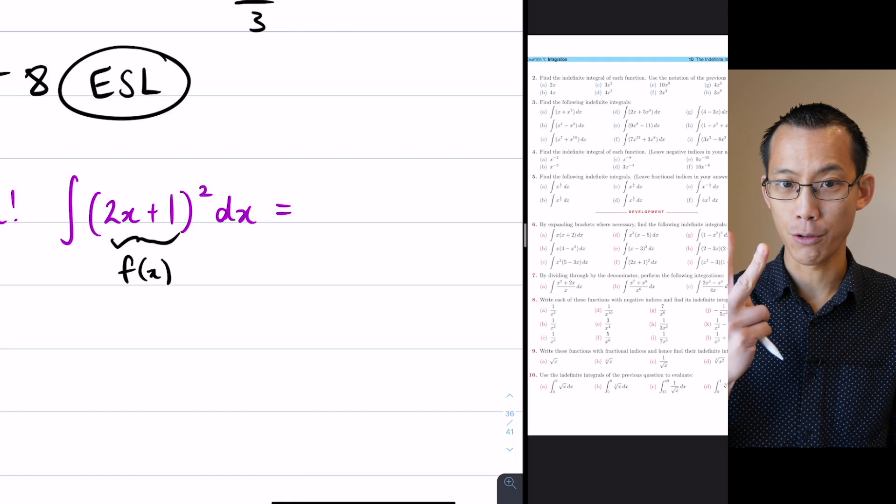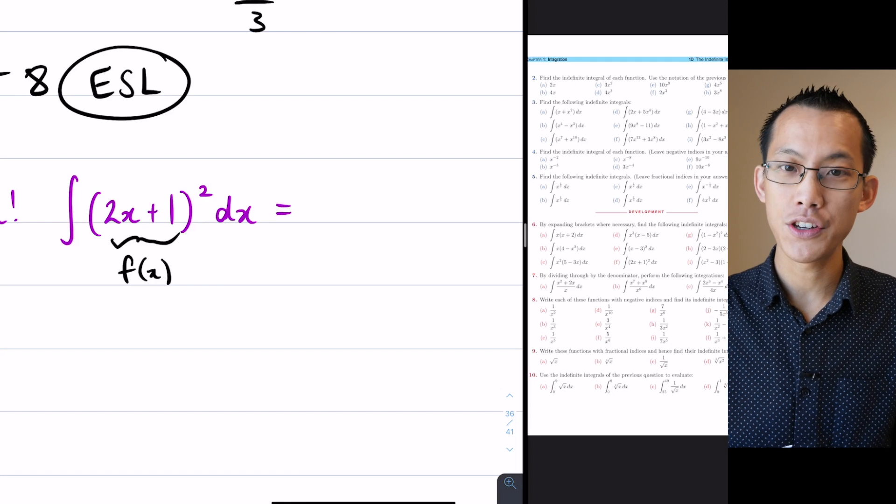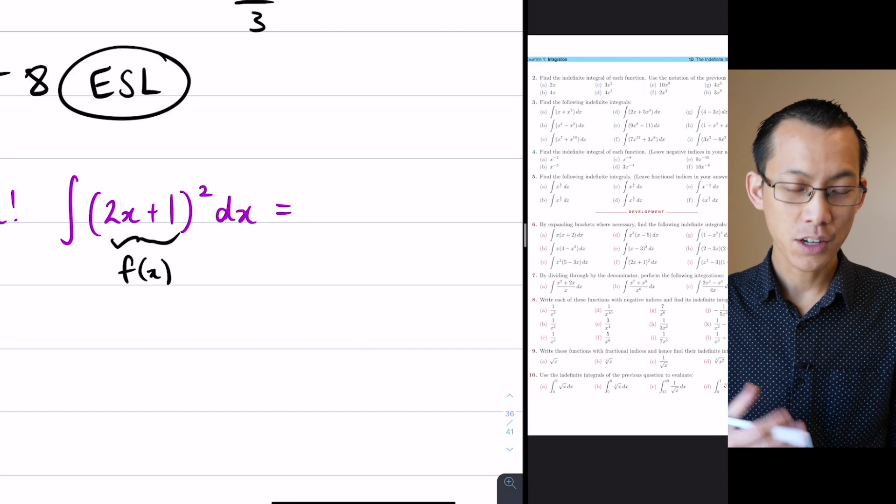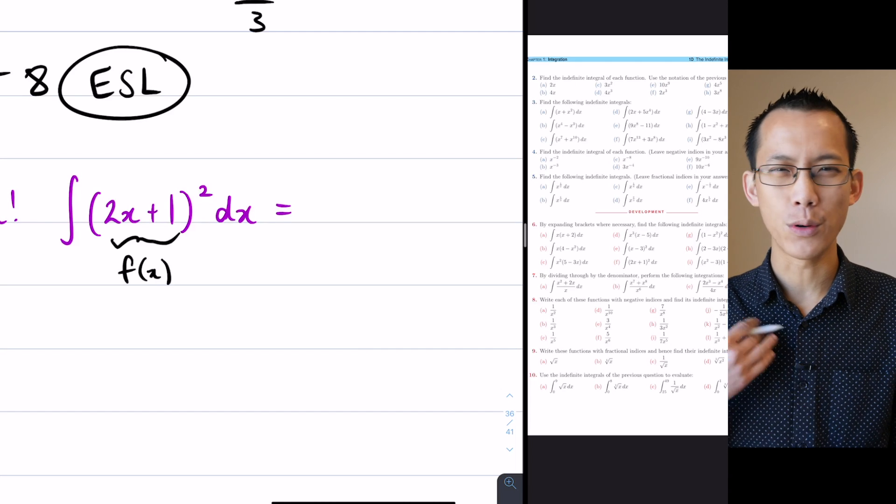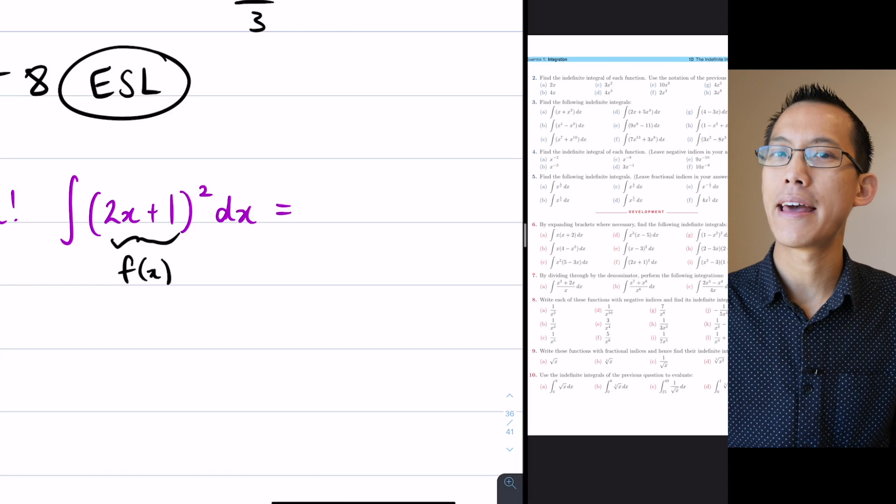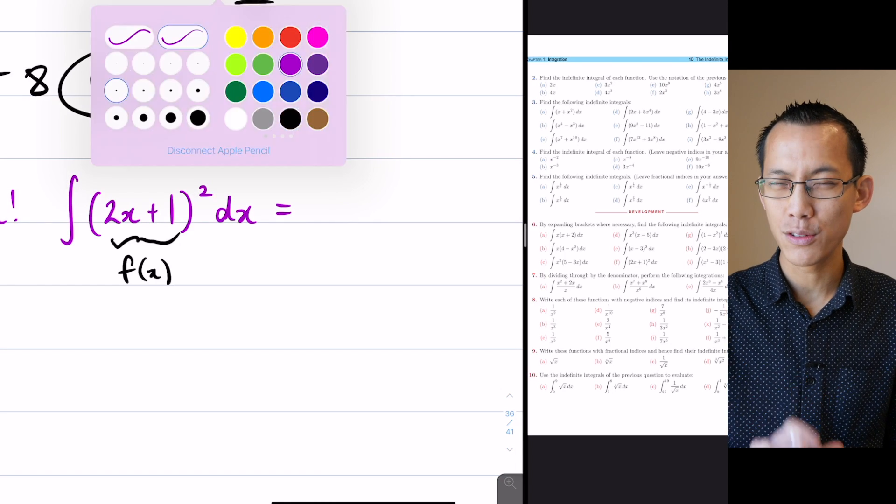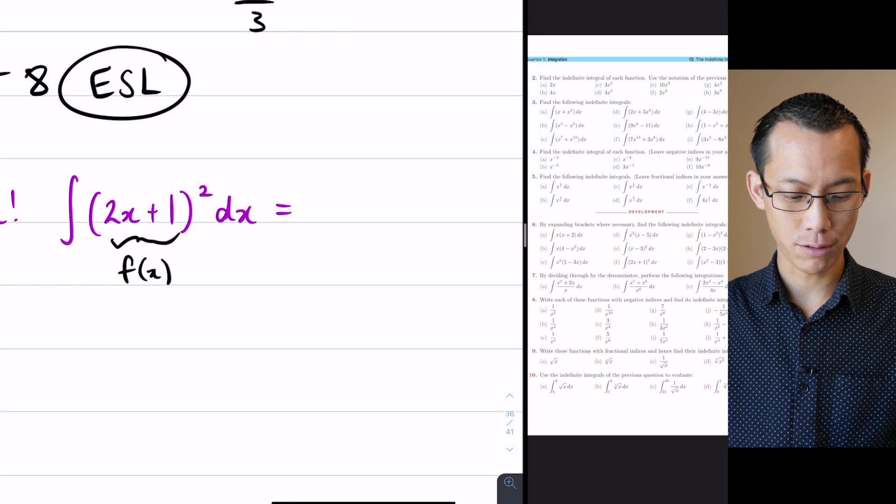So there would be a constant coefficient that will be added if we differentiated and got to this result. Now constant coefficients can be multiplied or divided by and they don't dramatically change what's happening with the calculus, so I can show you how to use that fact to do this integral.